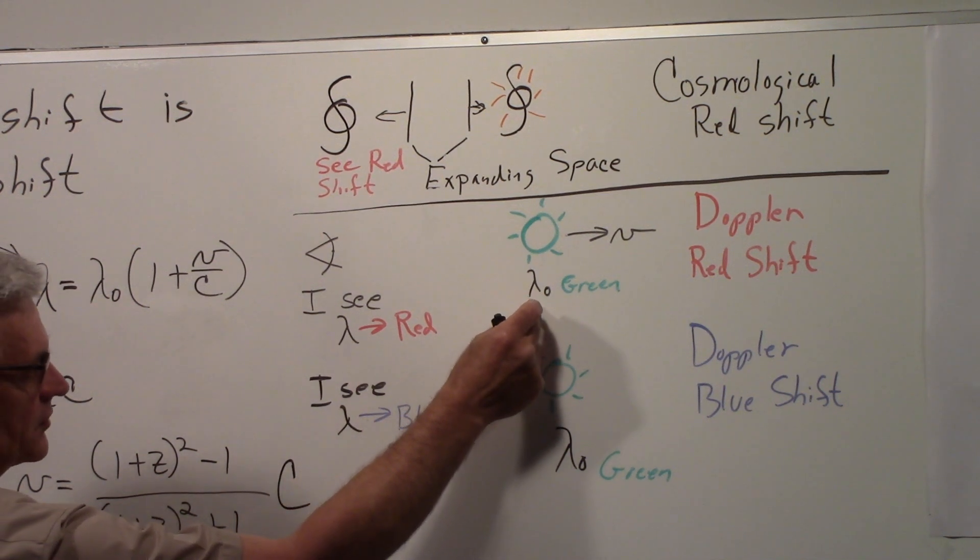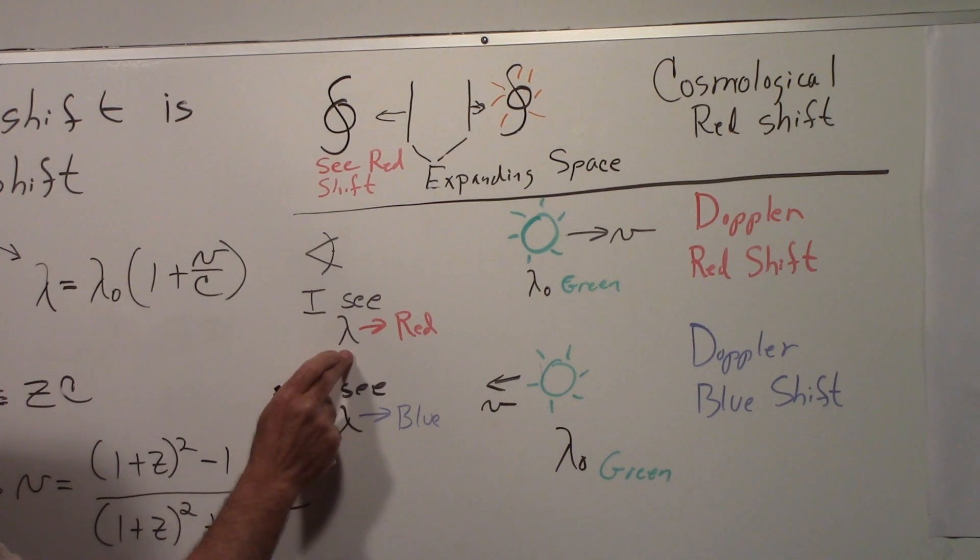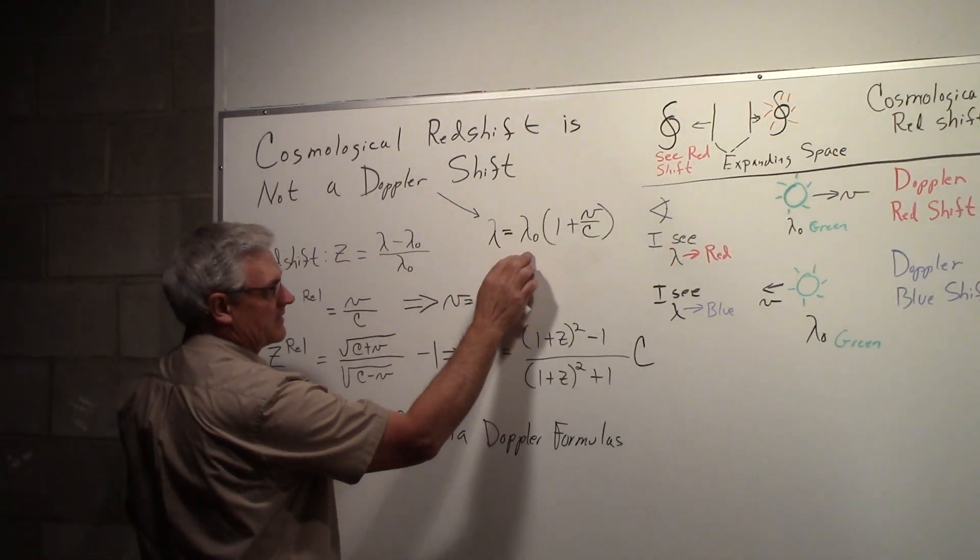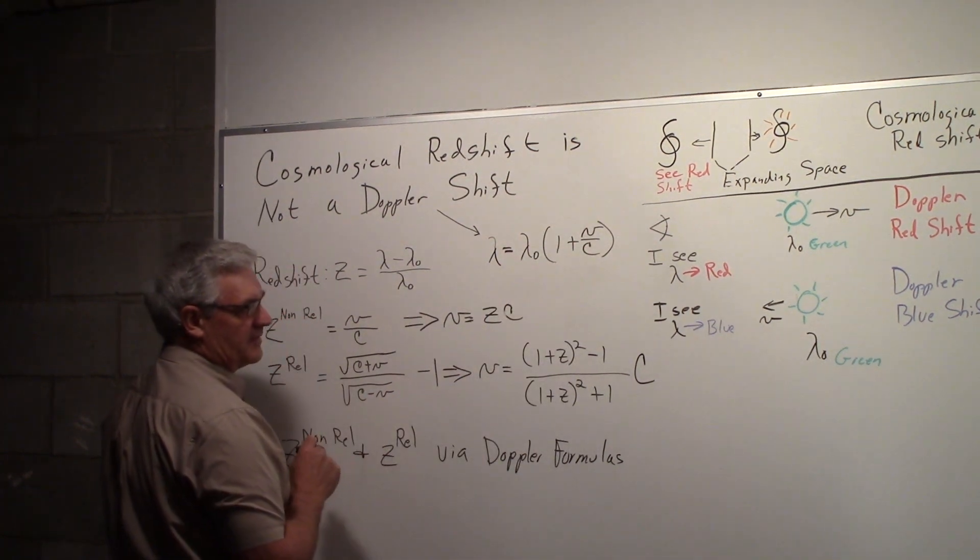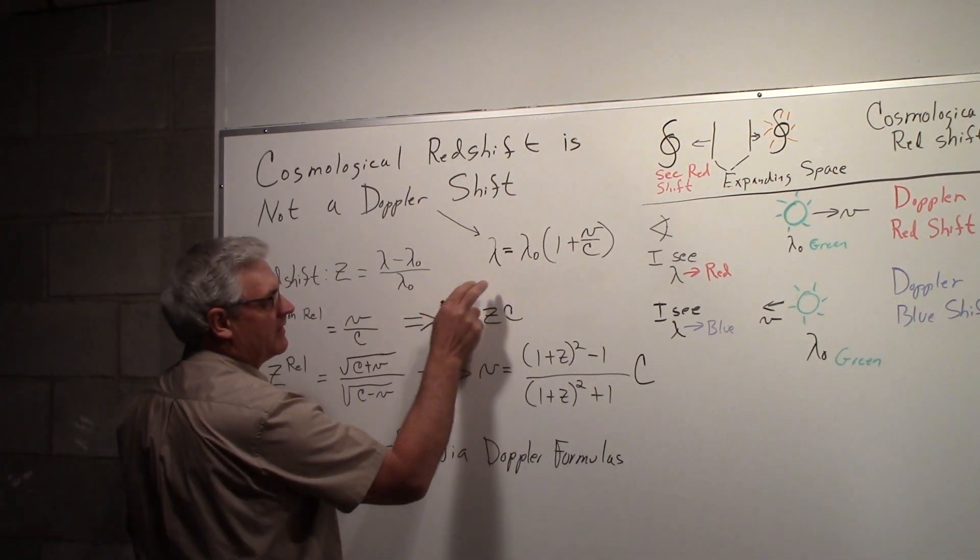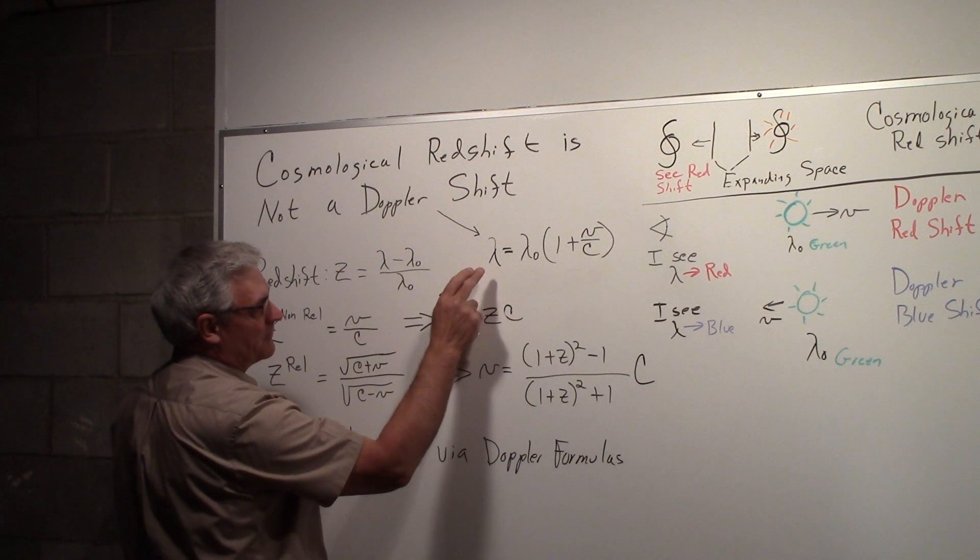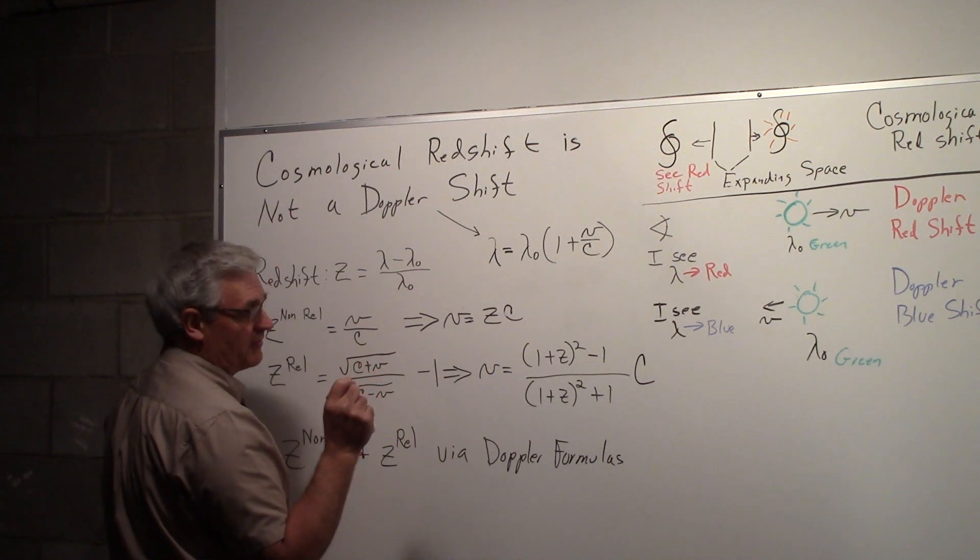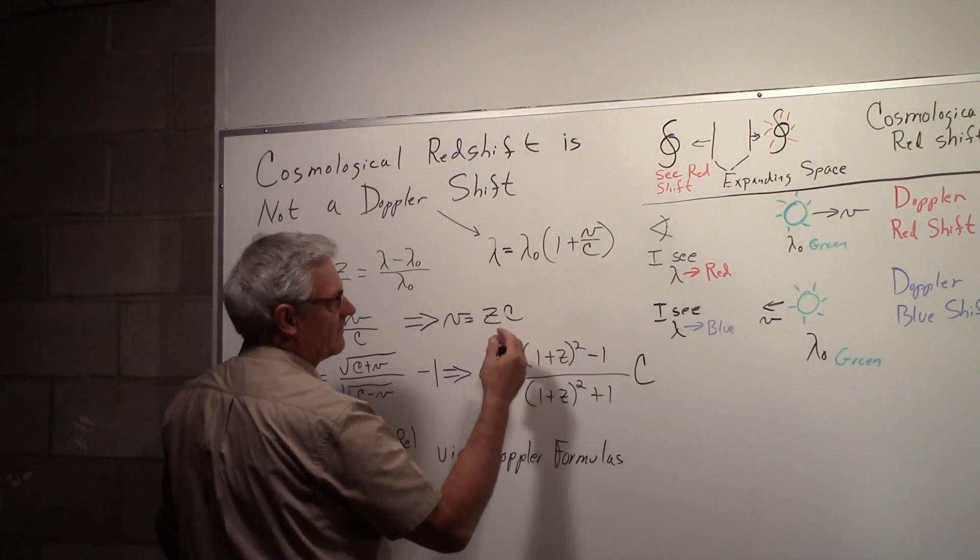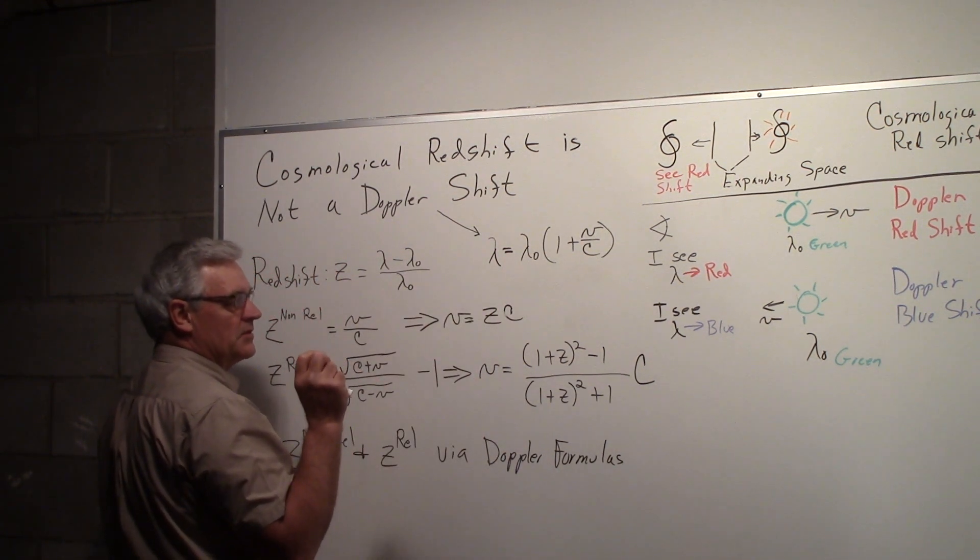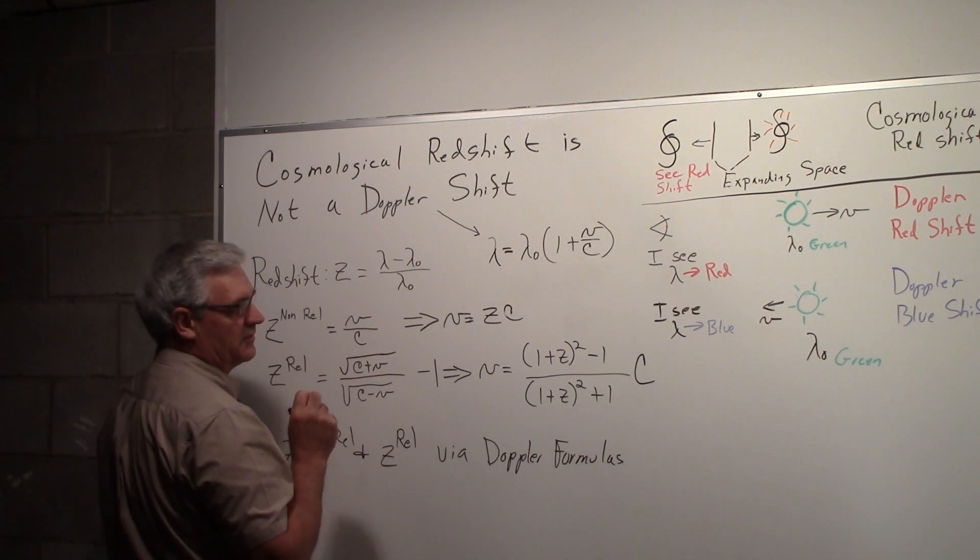So this is the emitted wavelength, the original wave, the initial wavelength λ₀. This is the wavelength that we see. And there's a formula for the Doppler shift: λ = λ₀(1 + v/c). So if the velocity is positive, the wavelength that reaches you will be increased. If the velocity is negative, that corresponds to a redshift—longer wavelength. The velocity is negative, the wavelength you see will be shortened. Shortened wavelengths correspond to what's called a blue shift.